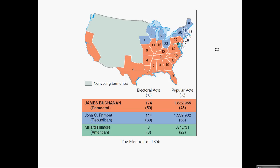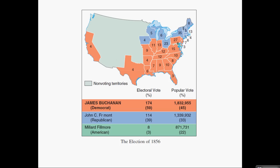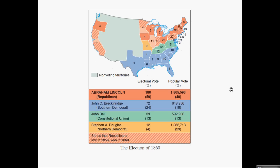Millard Fillmore supported the Compromise of 1850. He knew that if the slavery question were decided, the country would go to war. Maryland was actually the only state that supported Millard Fillmore, which is kind of interesting.